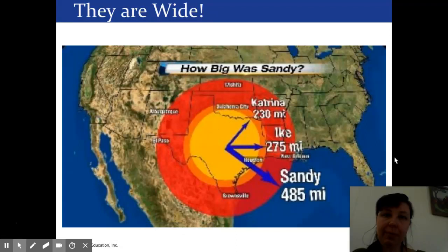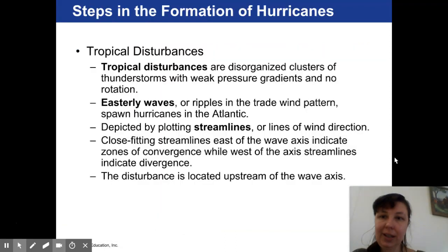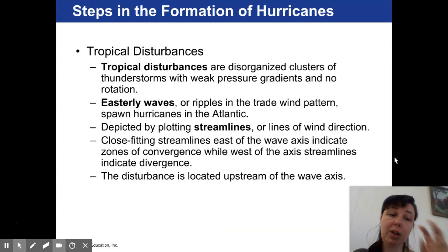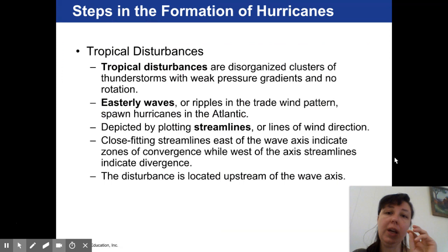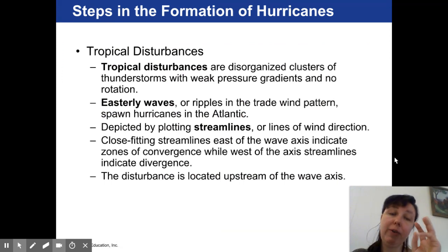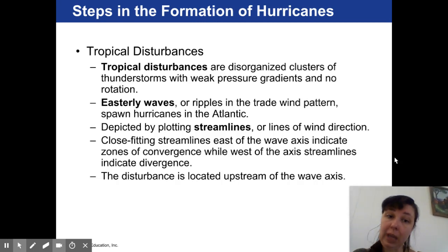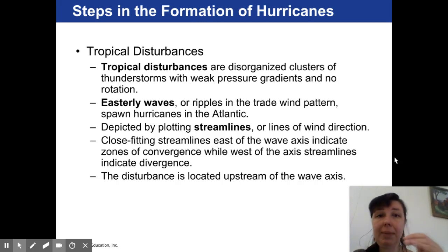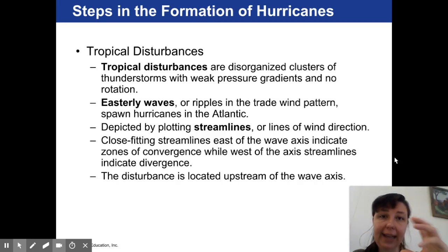Welcome to weather and forecasting module 11 part 2. The first formation stage of a tropical storm that can develop into a tropical cyclone is called a tropical disturbance. A tropical disturbance is when a trough of low pressure forms along a warm ocean surface. We call this trough of low pressure an easterly wave because it happens in the Hadley cell.